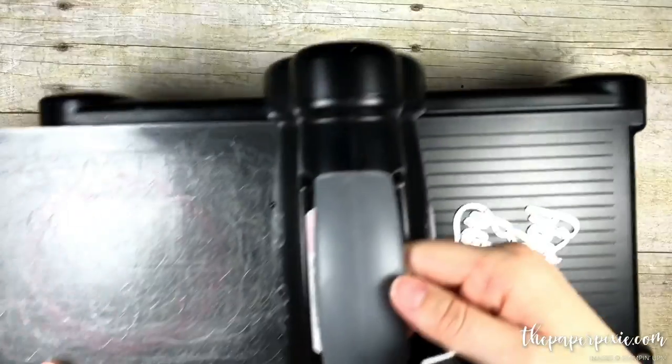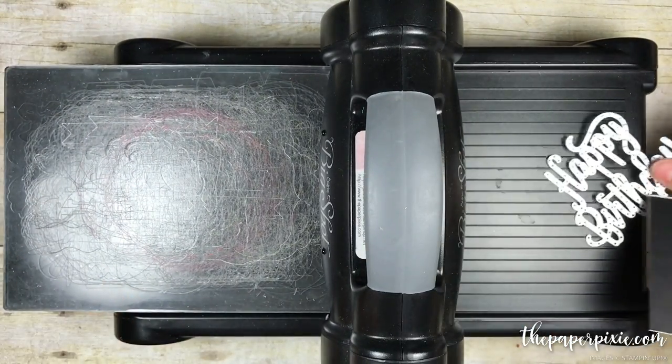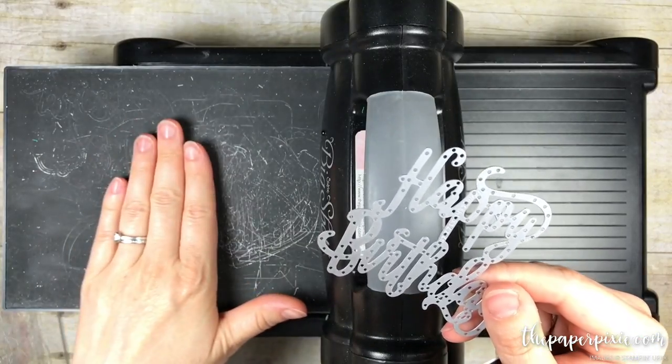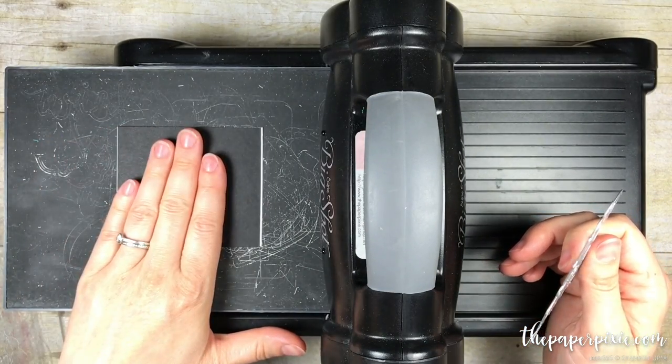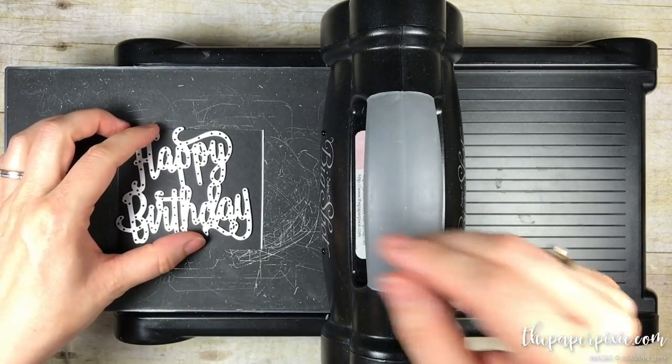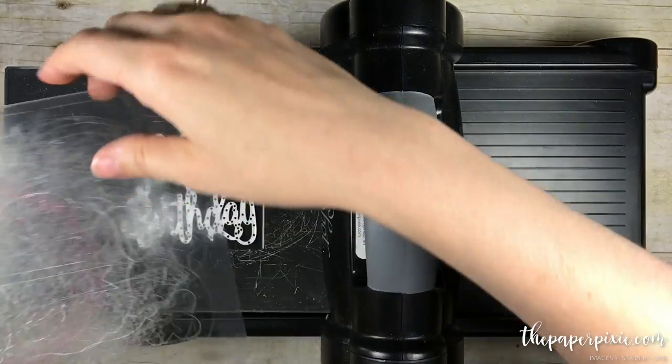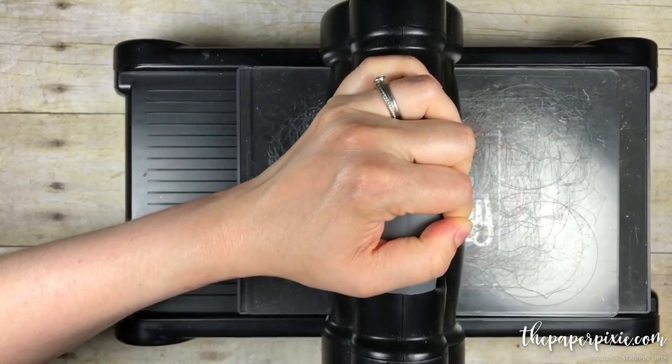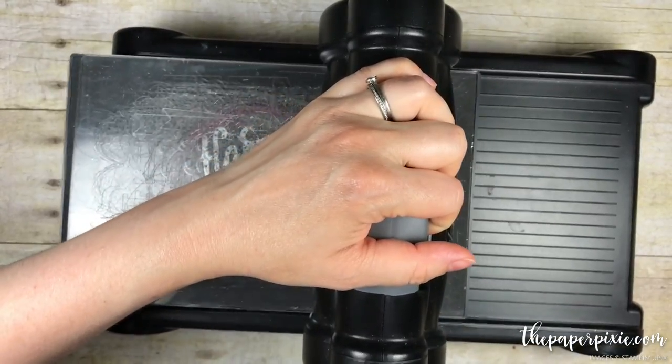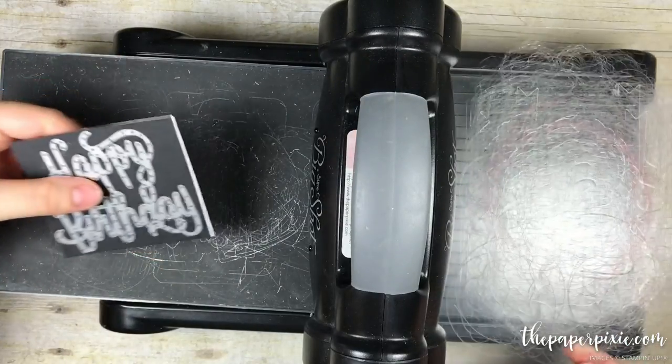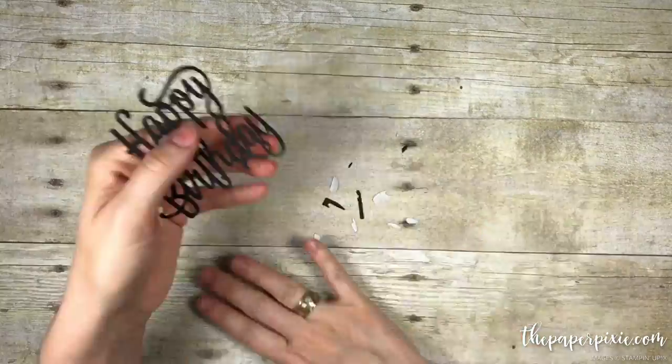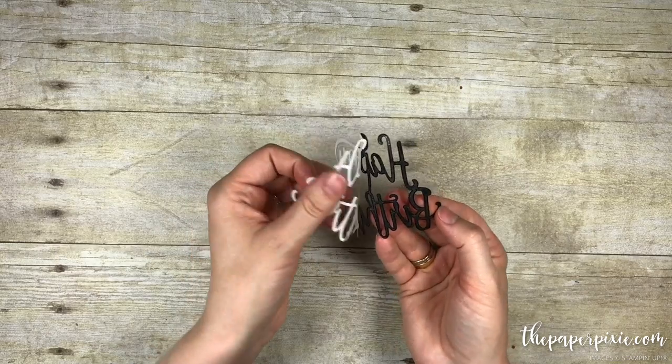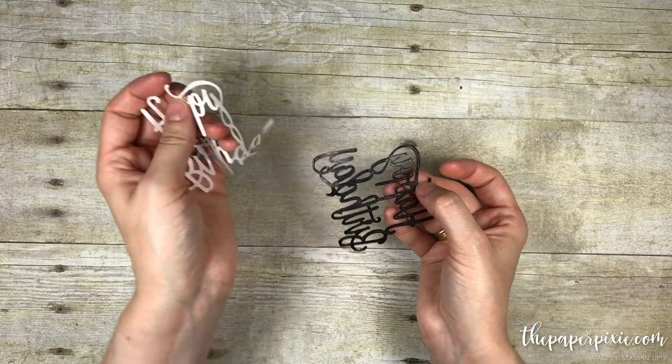I am going to bring in the big shot and I have got the happy birthday thinlets die. My sandwich here is the magnetic platform, the precision base plate. I am putting the card stock adhesive side down and I am going to add my die. And then I am going to put the top cutting plate and run that through the big shot. I am going to do that back and forth. Now that the die cut is all ready to go we are just going to pull off that adhesive backing and the whole back side of this die cut is now covered in adhesive. That is amazing!